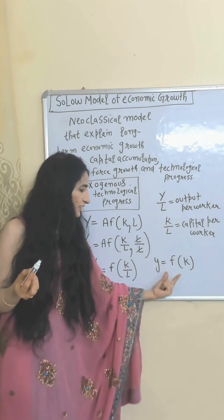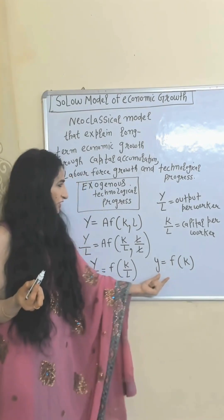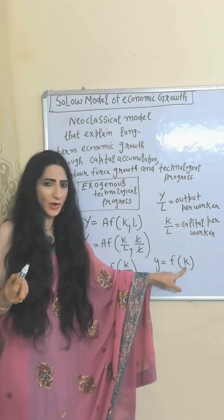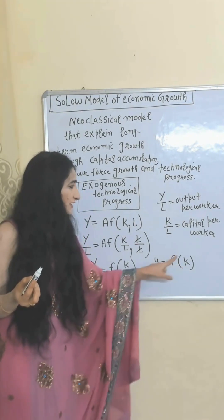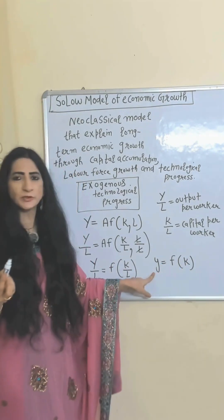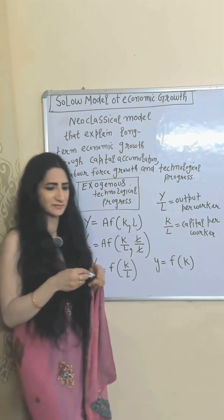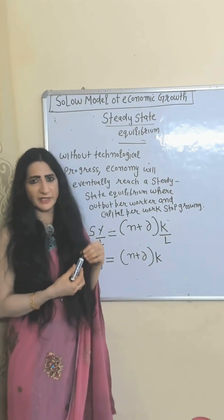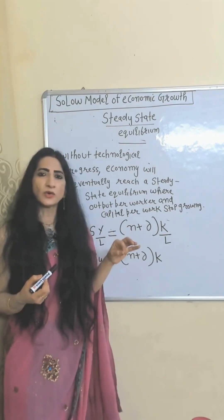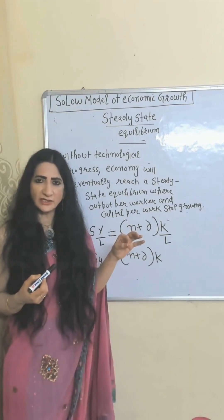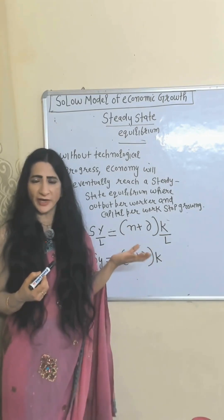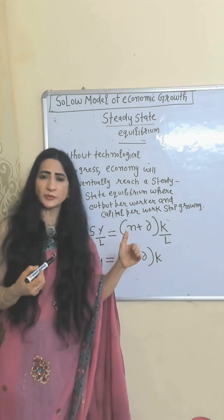For simplicity we write Y over L as small y and K over L as small k. According to this equation, output per worker is a function of capital per worker — that means output per worker depends on capital per worker. As capital per worker increases, output per worker also increases. Earlier we assumed technology is constant.